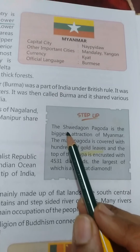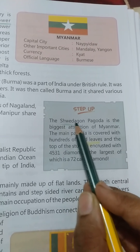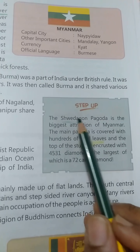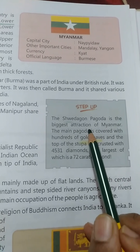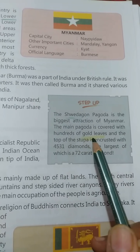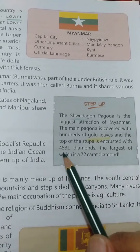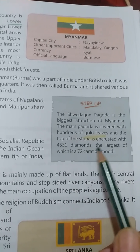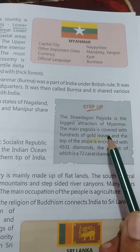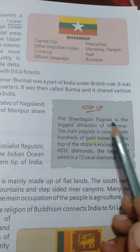Regarding the history link to India: Myanmar, or Burma, was a part of India under British rule. It was ruled with Kolkata as its headquarters, was then called Burma, and shared various religious and economic ties with India. The Indian states of Nagaland, Mizoram, Arunachal Pradesh, and Manipur share their borders with Myanmar.